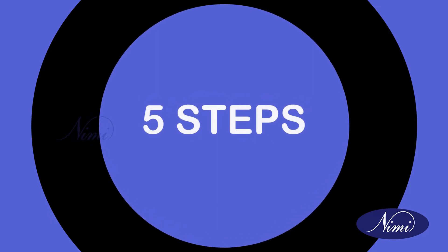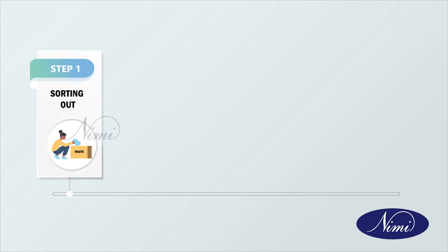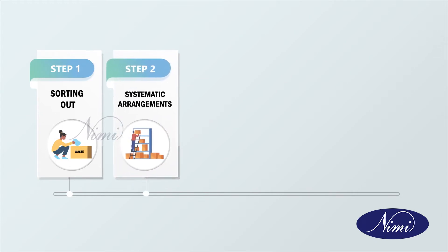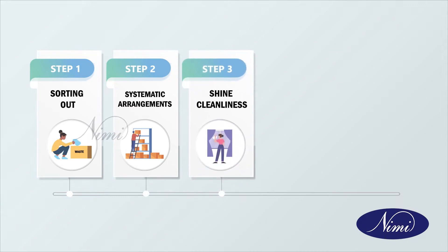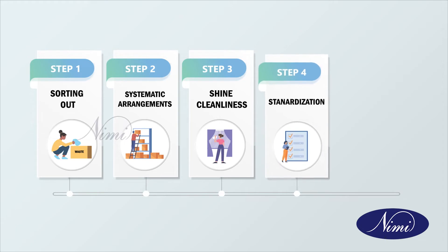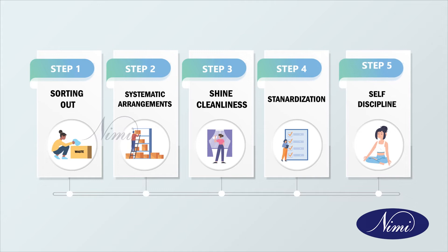The 5S terms — the five steps — are: Step 1, sorting out; Step 2, systematic arrangement; Step 3, shine cleanliness; Step 4, standardization; and Step 5, self-discipline.